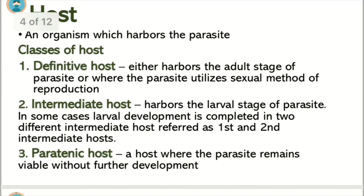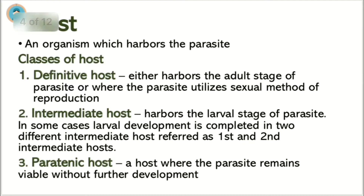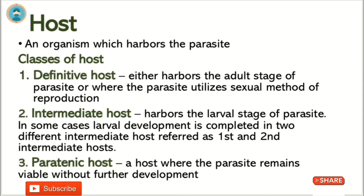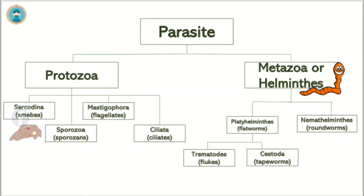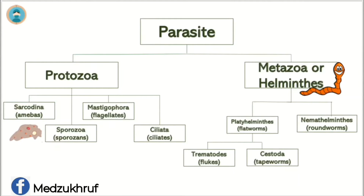A host is an organism which harbors the parasite. There are three main classes of hosts. The Definitive Host harbors the adult stage of a parasite, where the parasite utilizes a sexual method of reproduction. The Intermediate Host harbors the larval stage of the parasite. In some cases, larval development is completed in two different intermediate hosts, referred to as first and second intermediate hosts. The Paratenic Host is a host where the parasite remains viable without further development. A parasite is classified into two main classes: protozoa and metazoa, which are also known as worms.